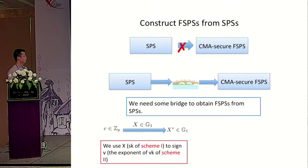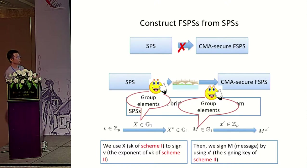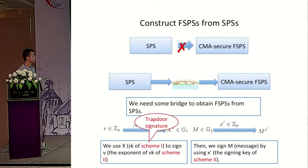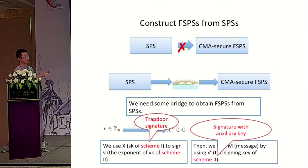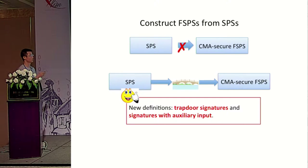So we need some bridge to obtain FSPS schemes from SPS. Our basic idea is to make use of capital X — the signing key of scheme 1 — to sign lowercase v, which is the exponent of the verification key of scheme 2. Then we use the signing key of scheme 2, which is X' in ZP, to sign the message. By doing this, we can make sure that both the signing key and the message are in the group. We formalize the first scheme as the trapdoor signature scheme and the second scheme as the signature with auxiliary key.